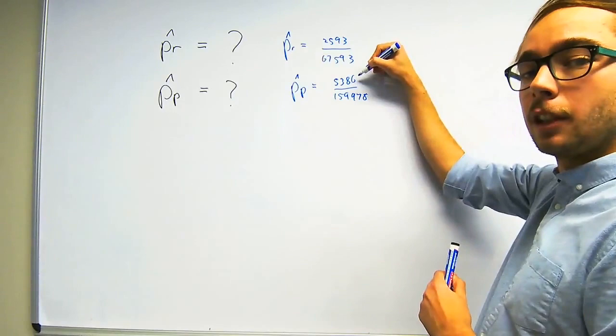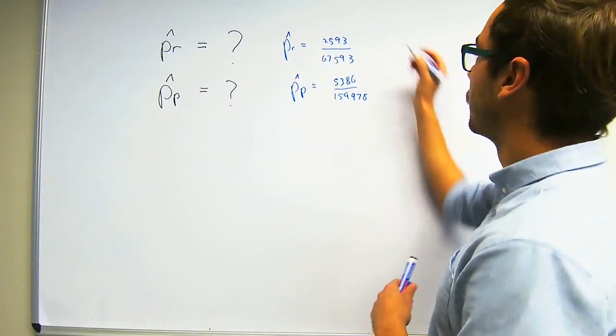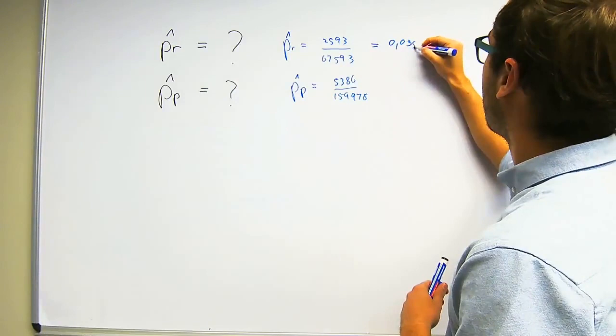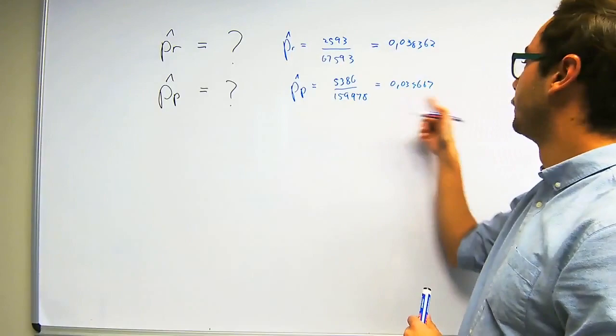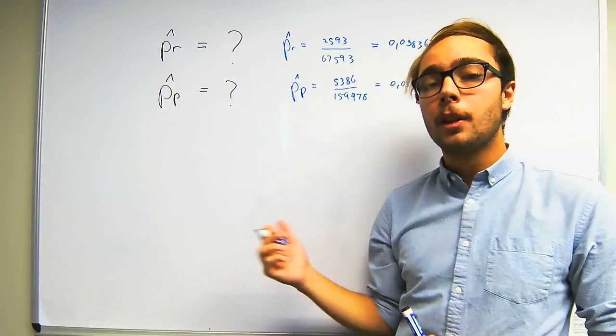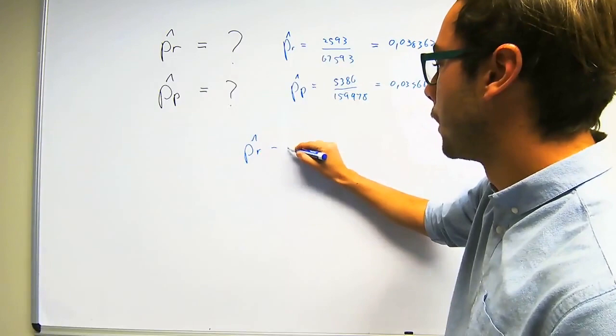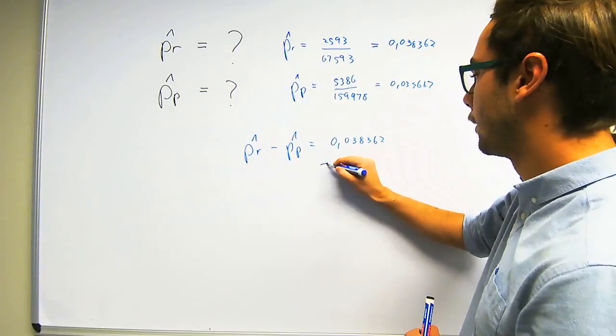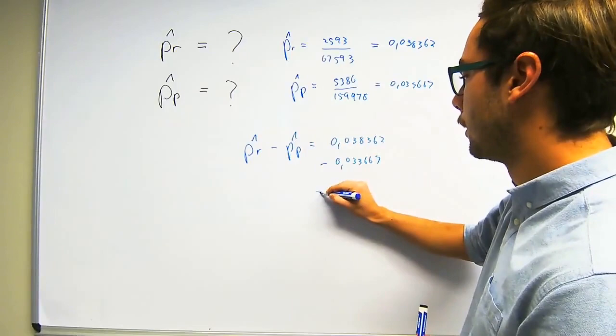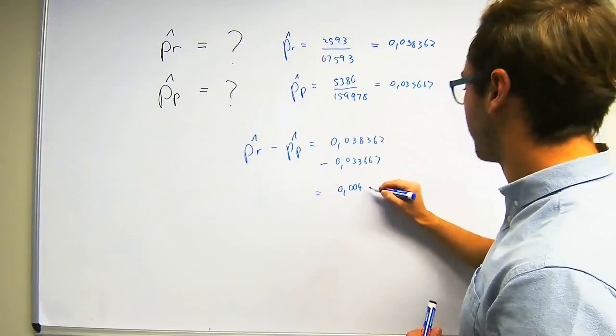If we work those two out, we get 0.038362 for rosoglitazone and 0.033362 for pioglitazone. It's important to keep a fairly large number of decimal places for accuracy. The question then asks us to find the difference between the two proportions. That is PR observed minus PP observed, which is 0.038362 minus 0.033366. The difference between the two proportions is 0.00469.